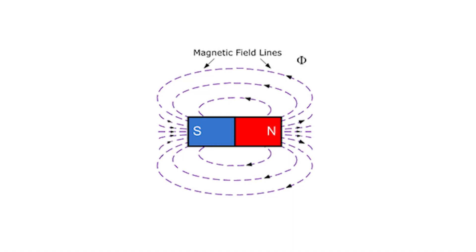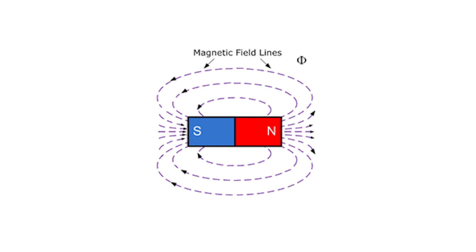Magnetized objects have two poles, north and south. The lines of a magnetic field flow into the south pole and expel from the north pole. If we take two magnets and match the north and south poles, an attractive force pulls them together.